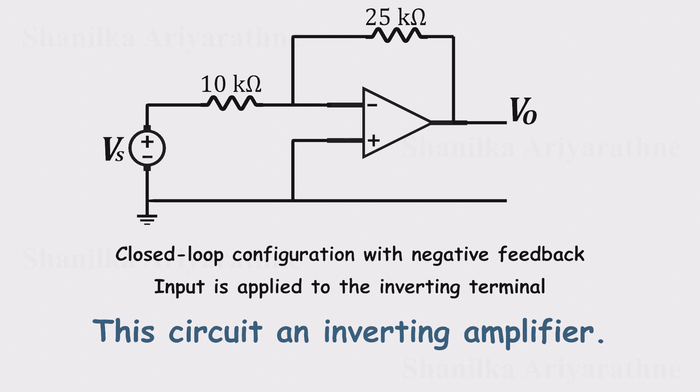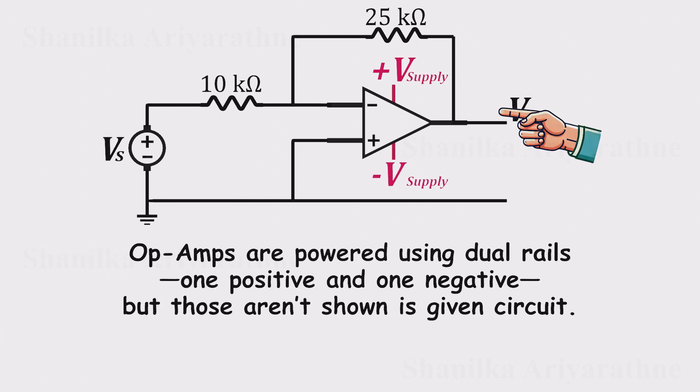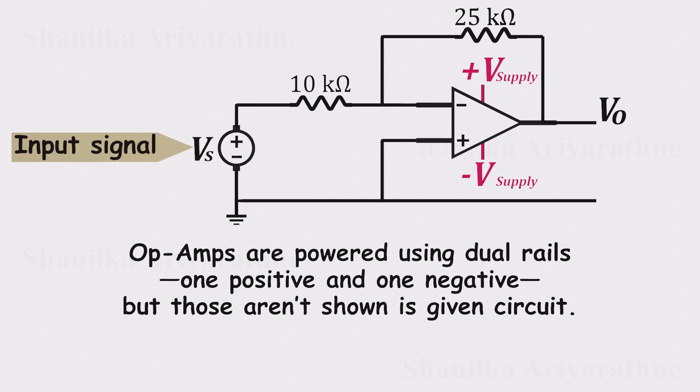Now one quick clarification. Don't confuse the voltage source in the diagram with the op-amp's power supply. In reality, op-amps are powered using dual rails, one positive and one negative, but those aren't shown here. The source labeled Vs is just the input signal.